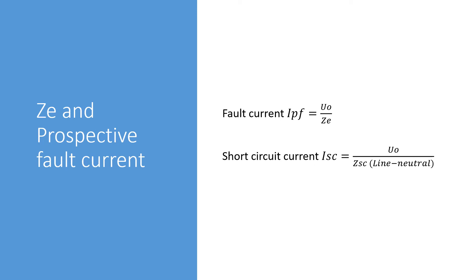On the EICR the prospective fault current is the greater of the fault current or the short circuit current which is typically the short circuit current. So when recording PFC I recommend measuring between both line and earth and line and neutral and then ensuring that the braking capacity of protected devices within the installation are sufficient.